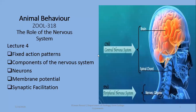The main points of today's lecture are fixed action patterns, components of the nervous system, neurons, membrane potential, and synaptic facilitation. We will overview the role of the nervous system in animal behavior. The nervous system plays a basic controlling role in all activities as well as behavioral patterns of organisms.